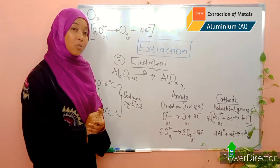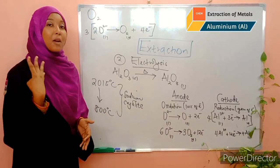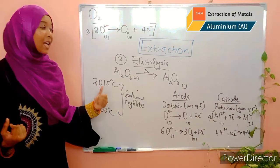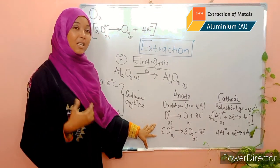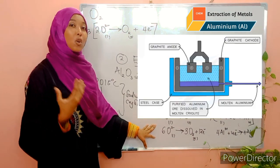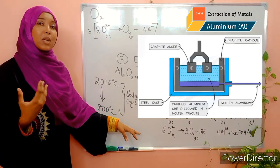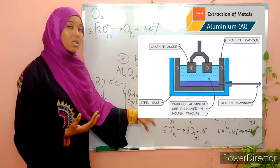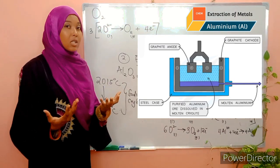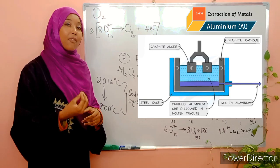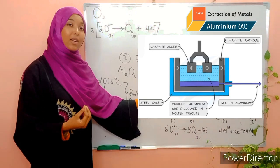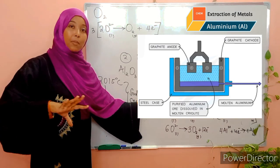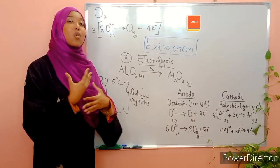So in total we form four aluminium atoms. Now, oxygen is discharged at the anode, and even though graphite is considered inert, over time the oxygen reacts with the carbon of the graphite. As a result, the graphite anode has to be replaced time and time again because it is eroded over time.